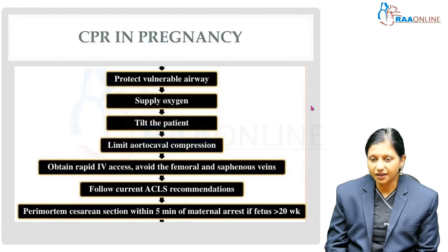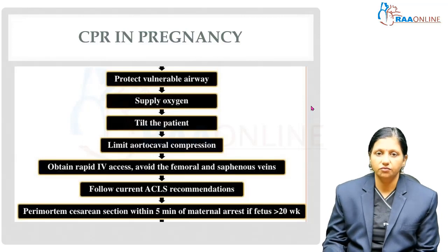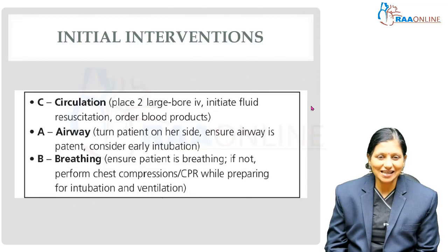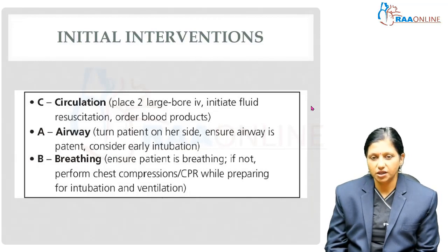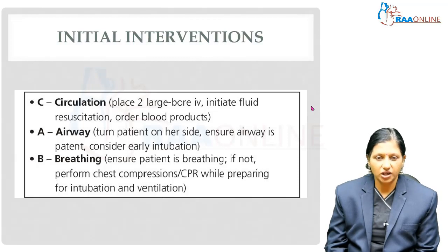Peripartum cesarean section should be done within five minutes of maternal cardiac arrest if the fetus is more than 20 weeks, in order to improve the chances of maternal resuscitation. Initial interventions include CAB: C is for circulation — place two large bore IV cannulas, initiate IV fluids, and order blood products.